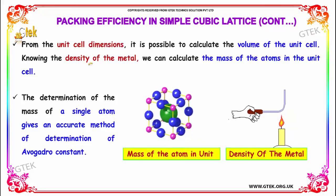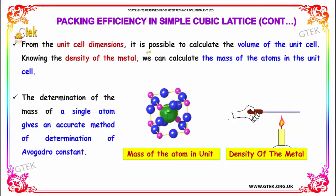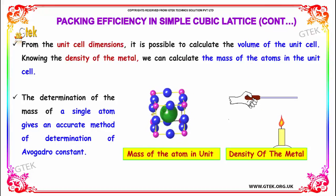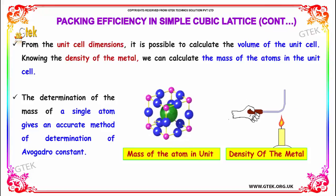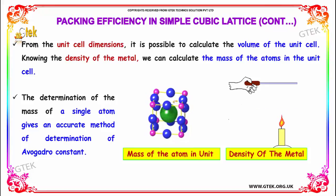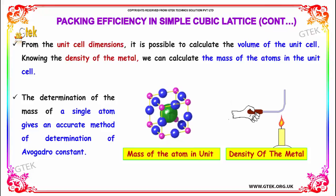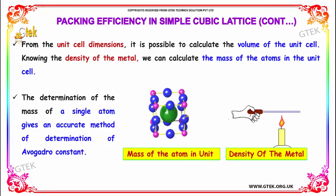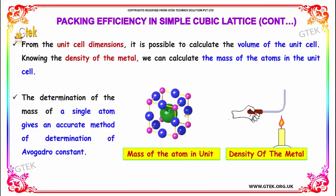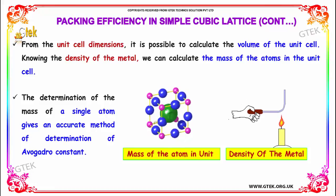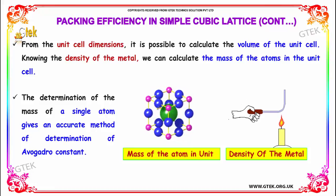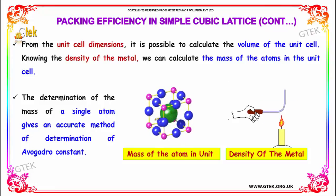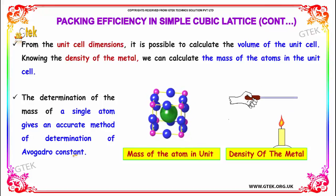From the unit cell dimensions it is possible to calculate the volume of the unit cell. Knowing the density of the metal, we can calculate the mass of the atoms in the unit cell. The determination of the mass of a single atom gives an accurate method for determination of Avogadro's constant.